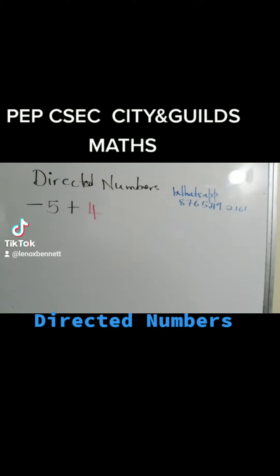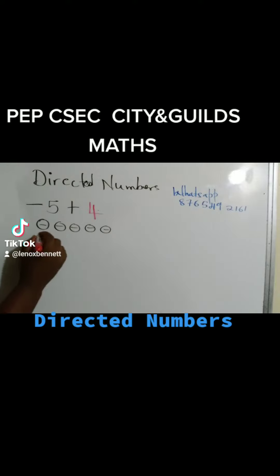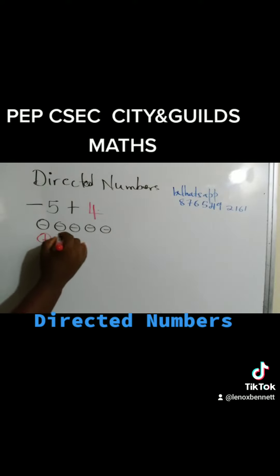So if you have negative 5, think of it literally as negative 5. So you have 1, 2, 3, 4, 5. And positive 4. So we're going to use red to represent positive 4. 1, 2, 3, 4.